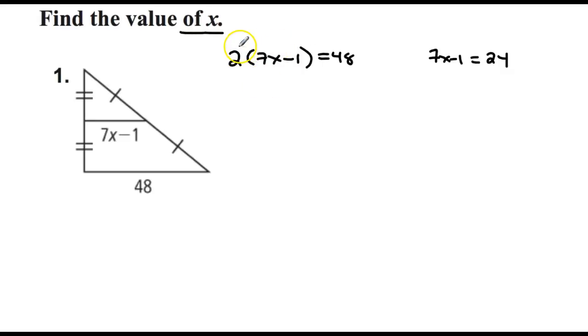Multiplying this out, remember you need to do the distributive property there. You get 14x minus 2 equals 48. Add 2 to both sides, you get 14x equals 50. And then from there, you're going to divide that out. It's not going to be a whole number. I get 3.57 for my answer.